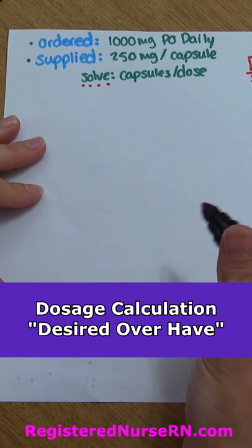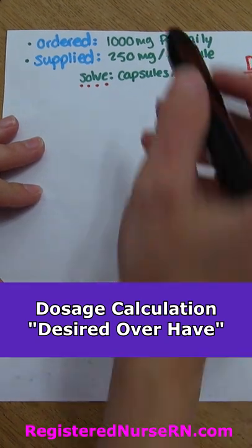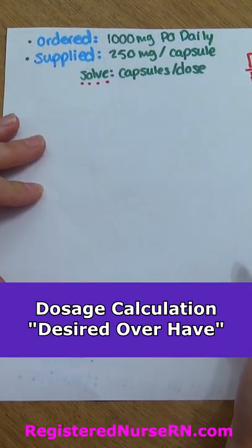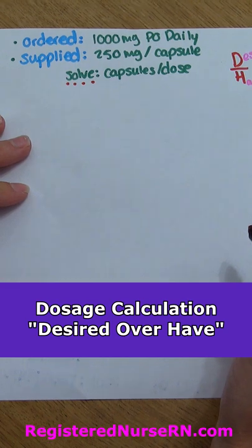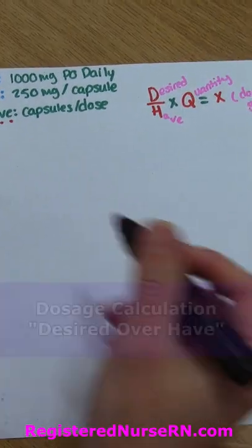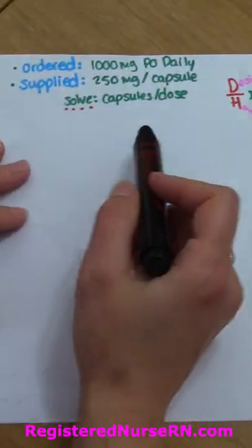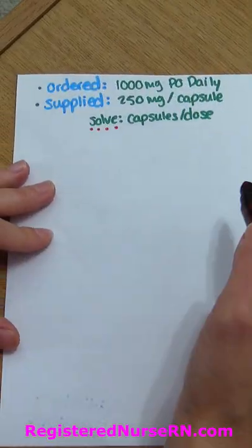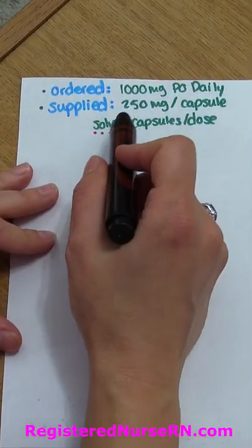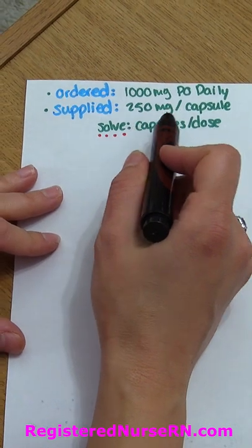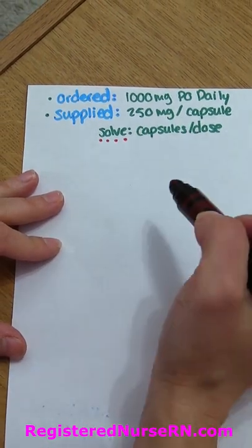Hey everyone, it's Sarah from NurseArian.com and I'm going to solve this dosage calculation using the desired over have method. Here's our order: the patient needs 1000mg PO daily, and we're supplied with 250mg capsules.